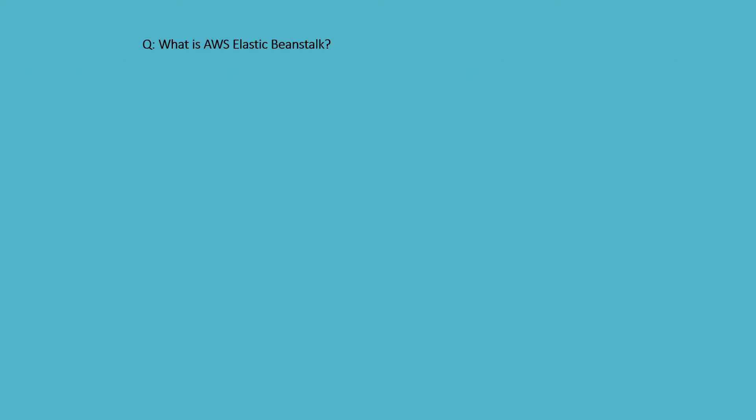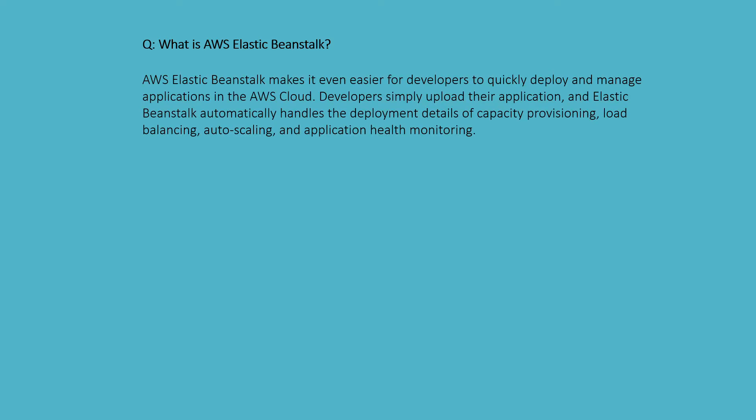What is AWS Elastic Beanstalk? AWS Elastic Beanstalk makes it easier for developers to quickly deploy and manage applications in the AWS Cloud. Developers simply upload their applications, and Elastic Beanstalk automatically handles the deployment details of capacity provisioning, load balancing, and auto-scaling application health monitoring.